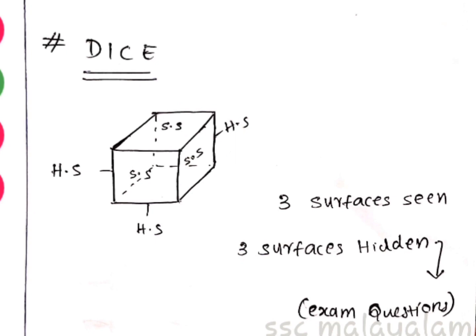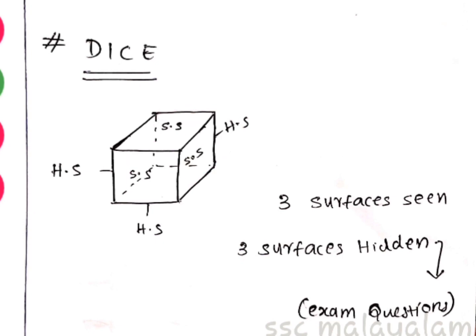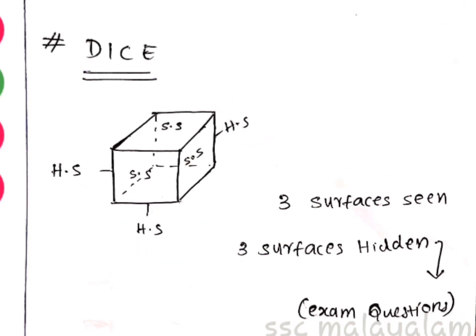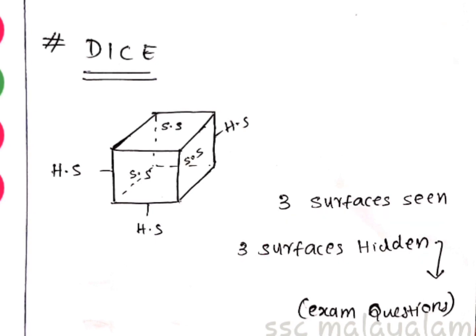In this figure we have 3 visible sides and 3 hidden sides. That's why we consider surface and hidden sides. I'll tell you about the questions.